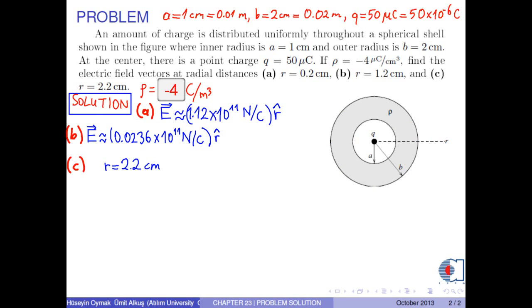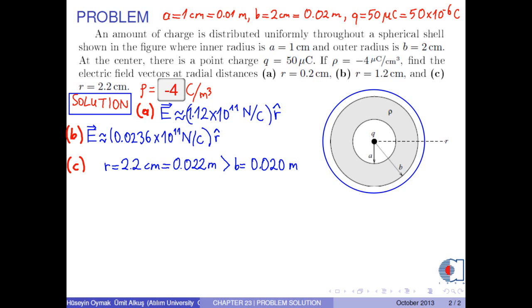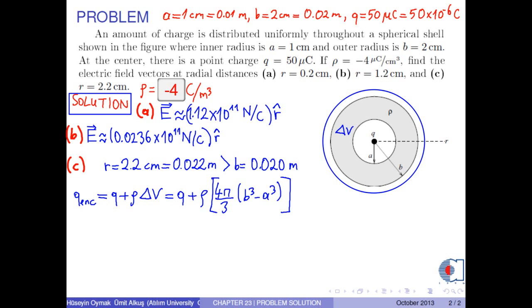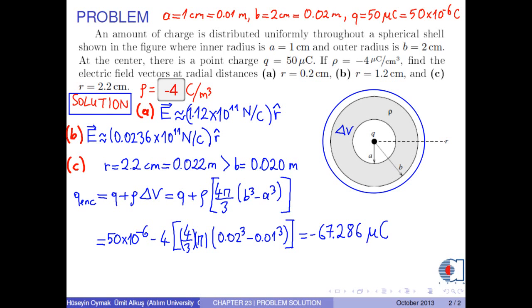For part C, R is 2.2 cm, which is 0.022 m. As you see, it is greater than the outer radius B. Therefore, we draw the Gaussian sphere outside the sphere. The total charge enclosed by this surface is Q plus rho times delta V, where delta V is the volume of the whole spherical shell, calculated by the formula 4 pi over 3 times B cubed minus A cubed. Substituting the numerical values, we obtain the enclosed charge as negative 67.286 microcoulombs.